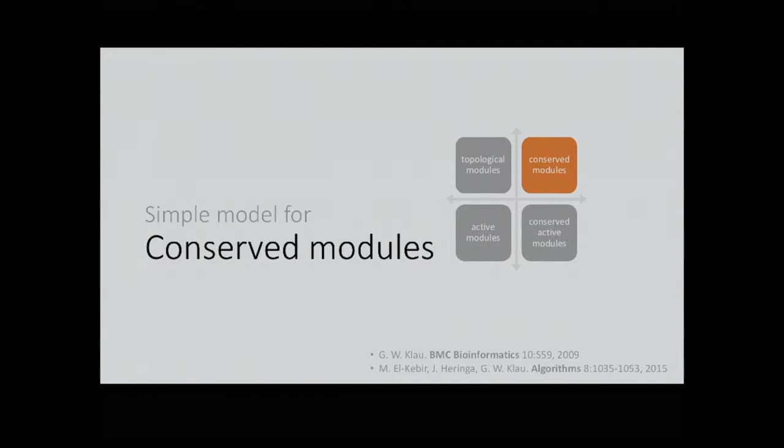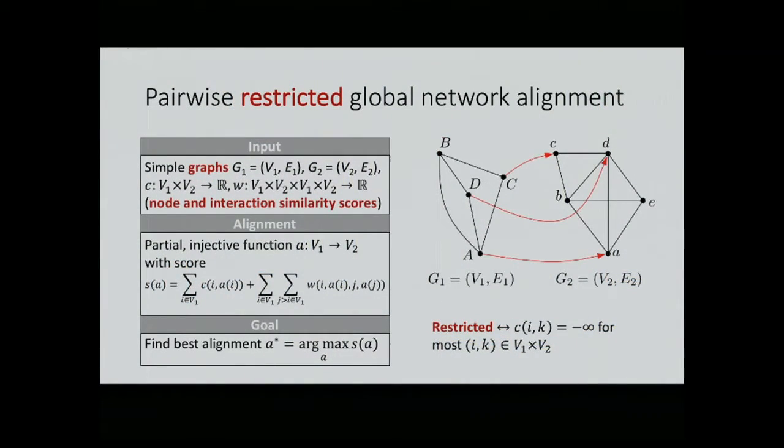The first part is a simple model for conserved modules, our work on global pairwise network alignment. This is somewhat older work that started in 2008-2009, and with the help of my former Ph.D. student Mohamed El-Kabir, we improved this in recent years. I focus on pairwise restricted global network alignment - restricted or sparse is really the key word here. This means that for a given node in one network, I'm only allowed to map it to a subset of other nodes in the other network. This is a big restriction, but it makes often sense because many times we have these relations given in terms of orthology databases.